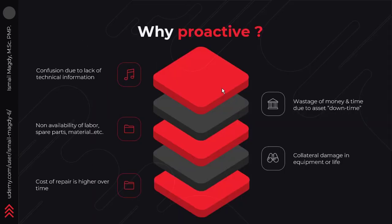We mentioned earlier that we want to be proactive as much as possible — but why can't we just wait till any equipment fails and then start fixing it? This is because corrective maintenance has many cons that we want to avoid. Equipment failure can lead to confusion during repair due to lack of technical information, because laborers will start working on the spot without prior knowledge or a plan of the issue, which means they need to start checking and investigating every possibility before finding out the reason behind the failure. And once the source of the failure is identified, it is very probable that you will not have available spare parts or even qualified laborers for that specific task, which means you need to wait till you order the required spare parts, which could be time-consuming.